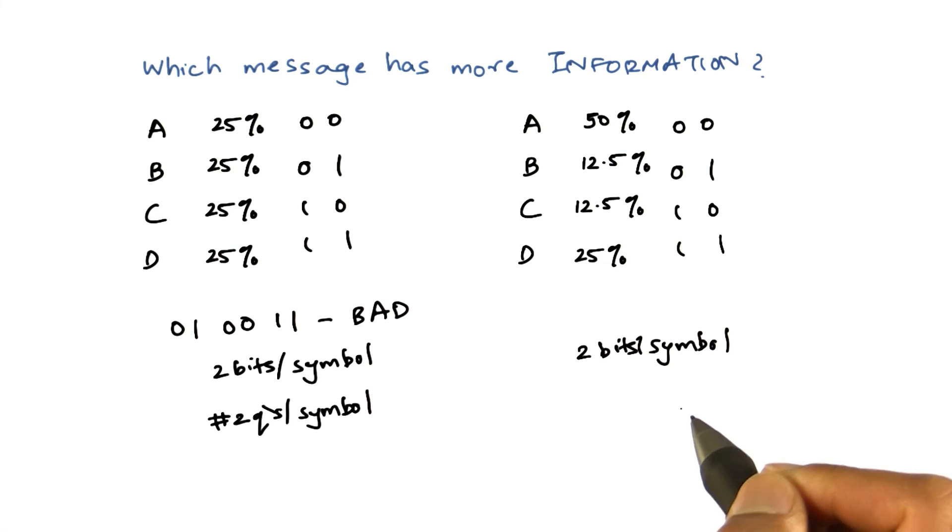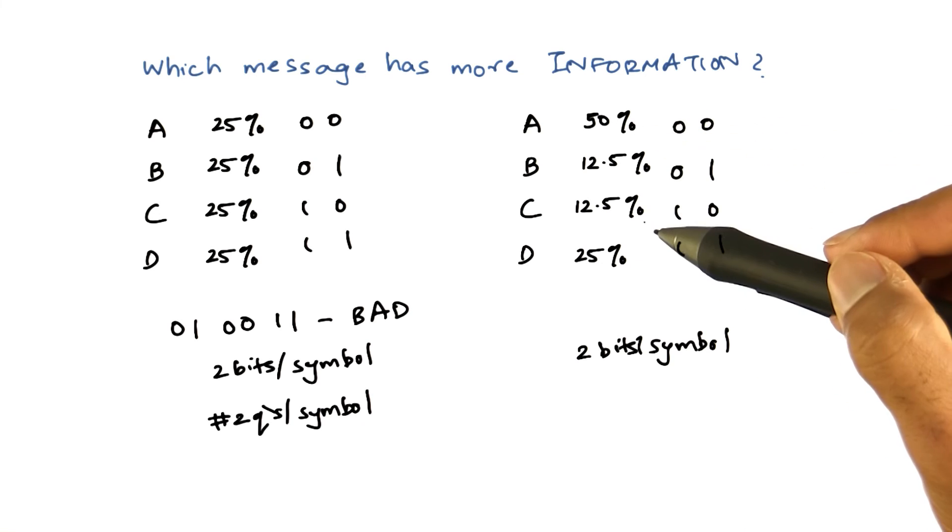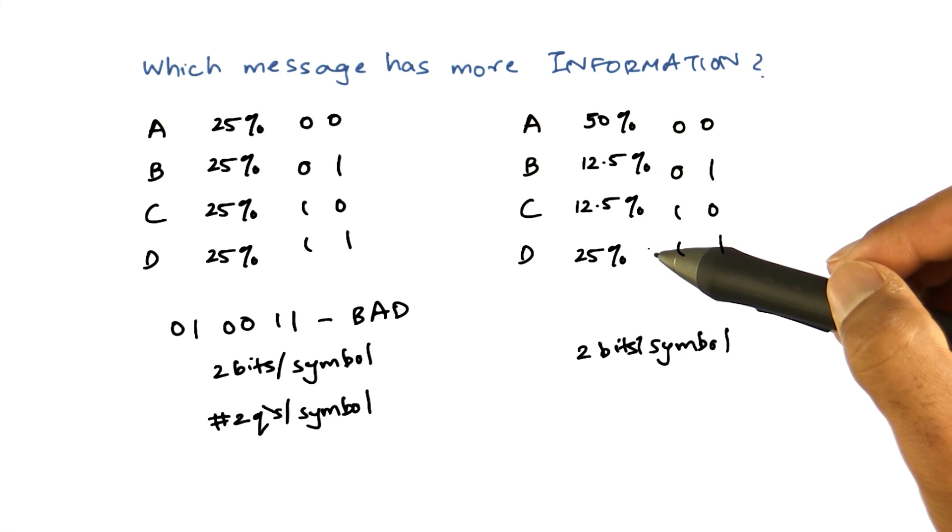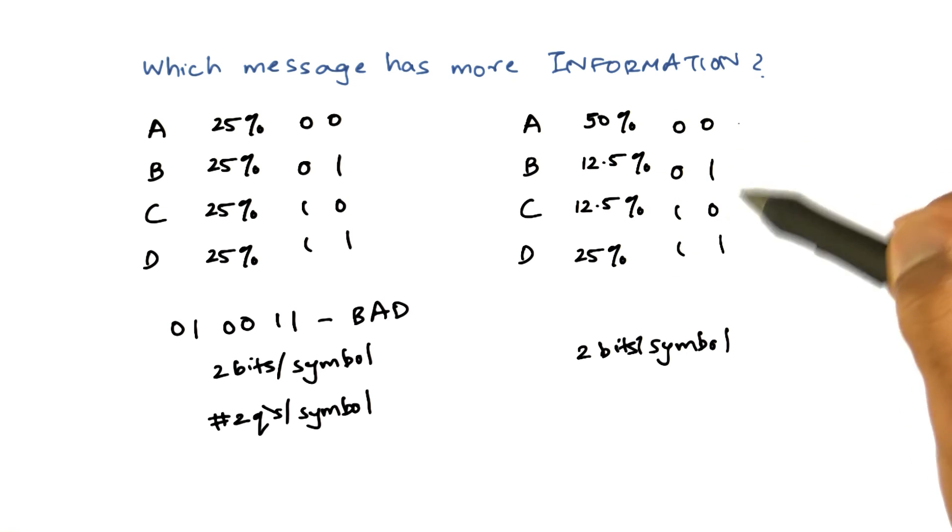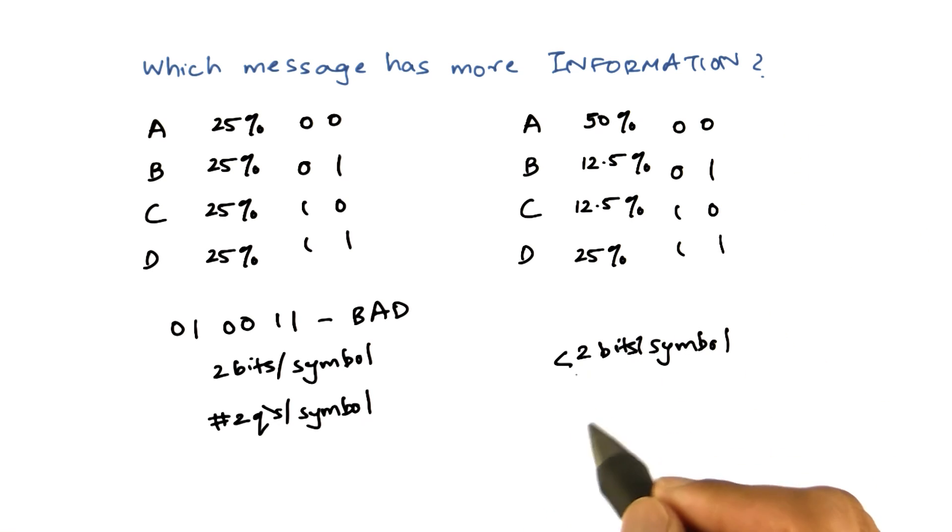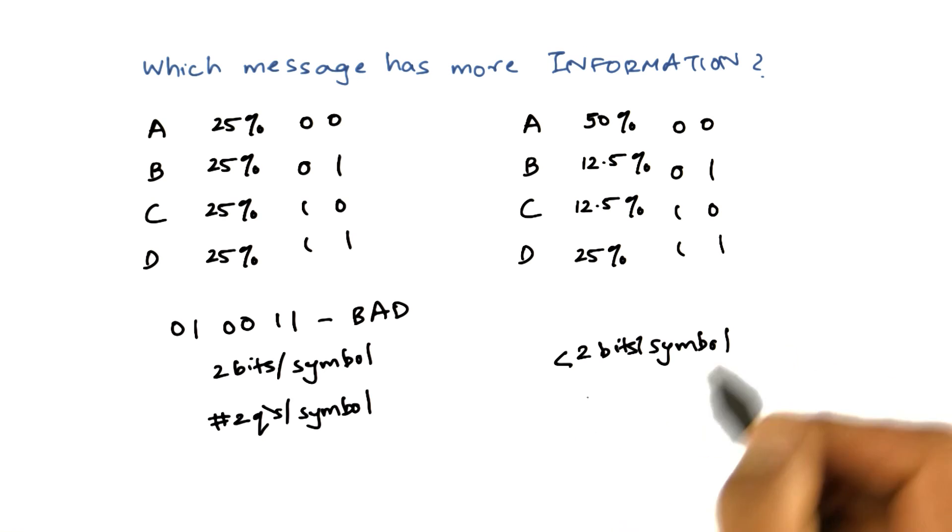But can we do any better? Well, A occurs more frequently than others. So can we somehow use this to our benefit and use a different bit representation to get slightly less than two bits per symbol? Think about it. Can you think of a new representation that might be better?